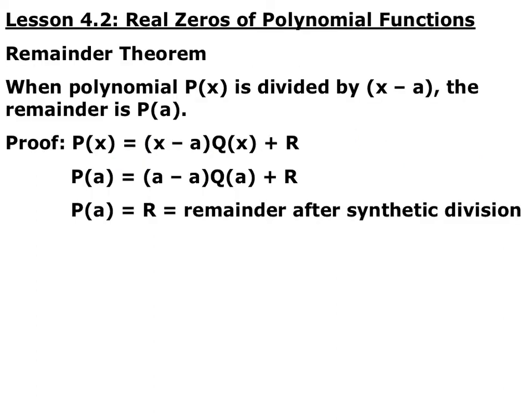Now the real part of section 4.2: real zeros of polynomial functions, starting with the remainder theorem. The remainder theorem says if you divide by a factor, whatever the remainder is equals the same value as if you plugged that number into the function. So for the previous example, we divided by x minus 5 and got a remainder of 0 — if we had plugged 5 into that polynomial, we also would have gotten 0.